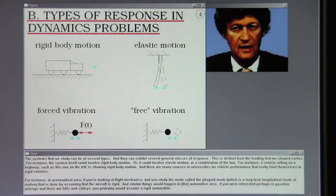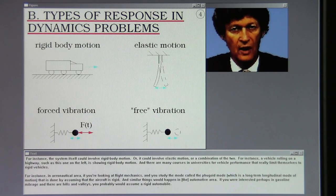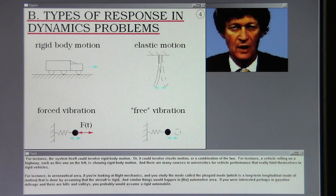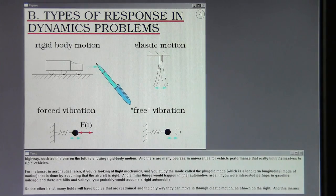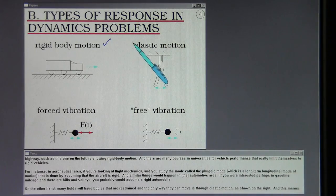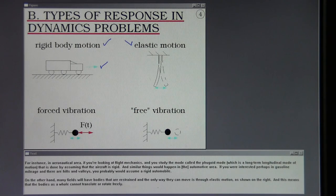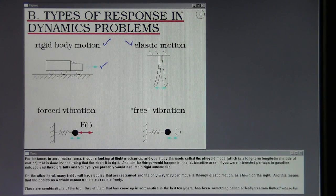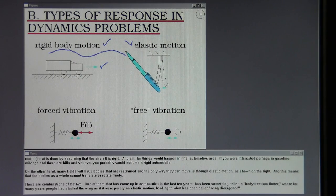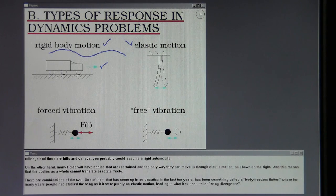Generally speaking, people will choose the worst portion of an expected forcing character and then do perhaps a stationary random study of this region, and then a deterministic study in some other region if they're able to break the loading into such pieces. The systems that we study can be of several types, and they can exhibit several general classes of response. This is distinct from the loading that we showed earlier. For instance, the system itself could involve rigid body motion, or it could involve elastic motion, or a combination of the two. A vehicle rolling on a highway is showing rigid body motion. There are many courses in universities for vehicle performance that really limit themselves to rigid vehicles.